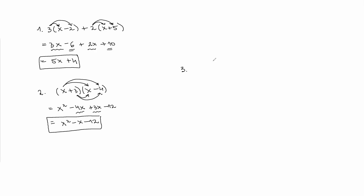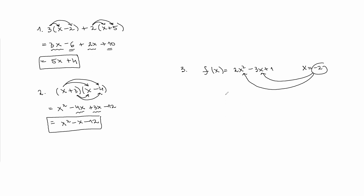The third and final problem is a bit more challenging. Evaluate the function f(x) = 2x² - 3x + 1 for x = -2. The only thing we have to do is substitute x with negative 2, so wherever we see x in the function, we just write negative 2. That gives us 2(-2)² - 3(-2) + 1.